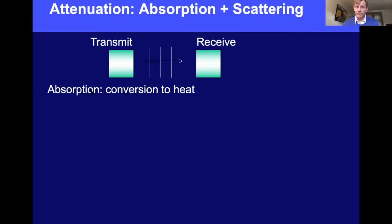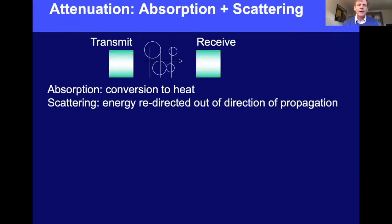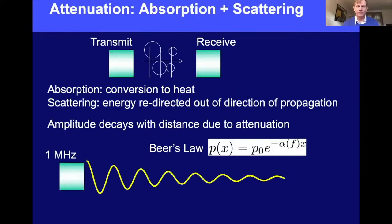That energy is lost through two mechanisms. The first is absorption — actual conversion into heat, leaving a little bit of heat behind in the tissue as the ultrasound passes through. The second is scattering: because tissue is not a homogeneous medium, it has lots of structures from organ-type structures all the way down to cells and intercellular components. Those property changes result in scattering or reflection, directing energy out of the beam, which is perceived as a loss of signal.